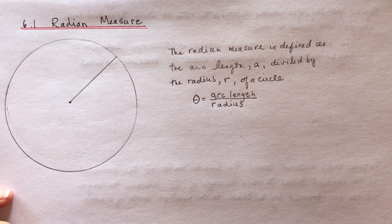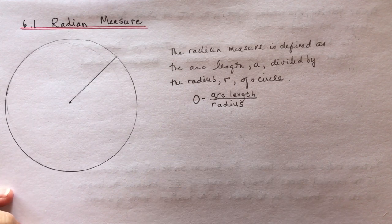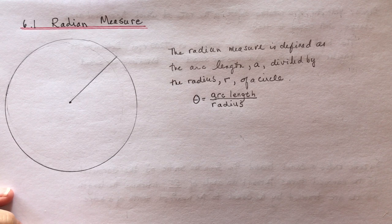A radian measure is defined as the arc length, A, divided by the radius, r, of a circle.